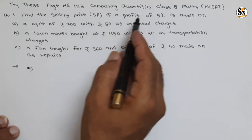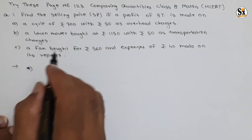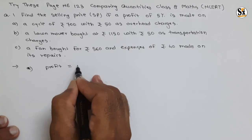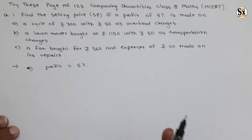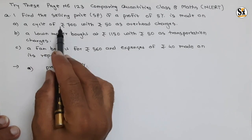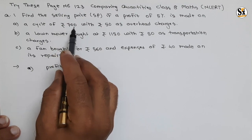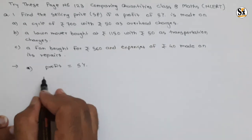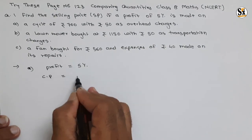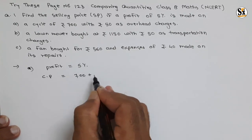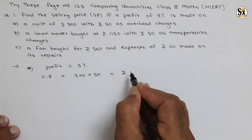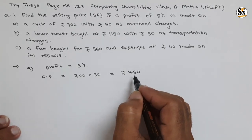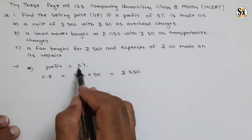Given data: profit is equal to 5 percent, and for the first example, 700 is the cost of the cycle. But there are rupees 50 overhead charges, so the cost price for the cycle will be rupees 700 plus rupees 50, which equals rupees 750. On this rupees 750, he is making 5 percent profit.